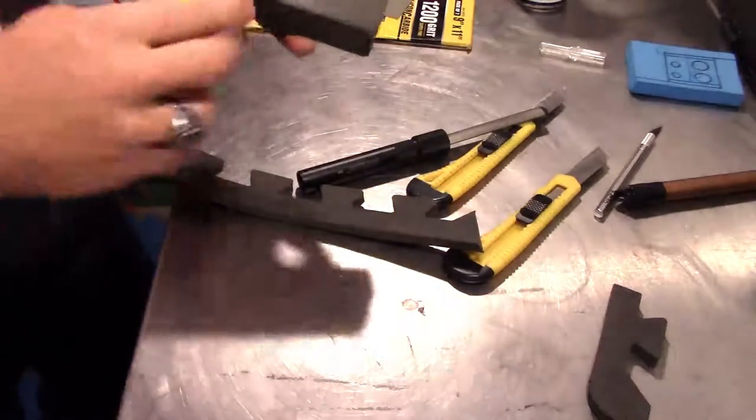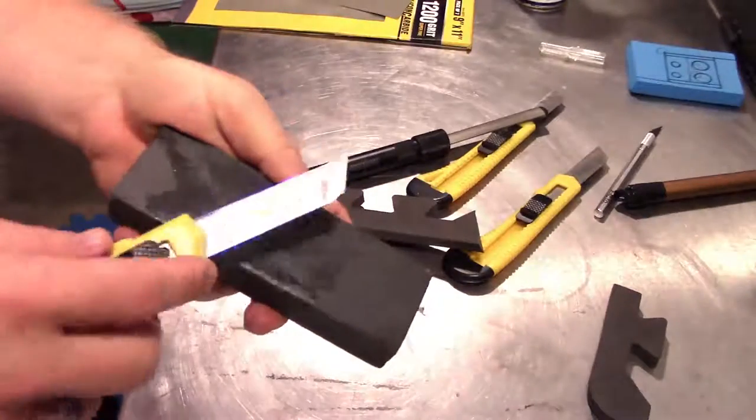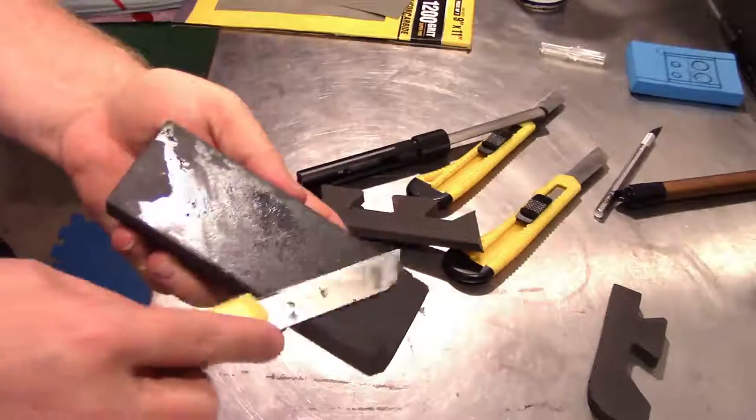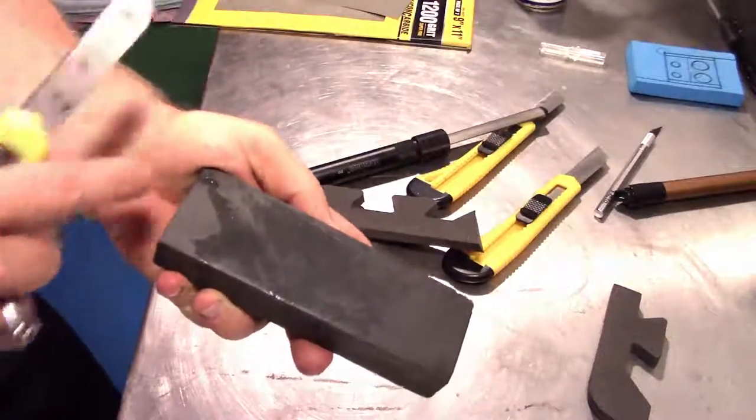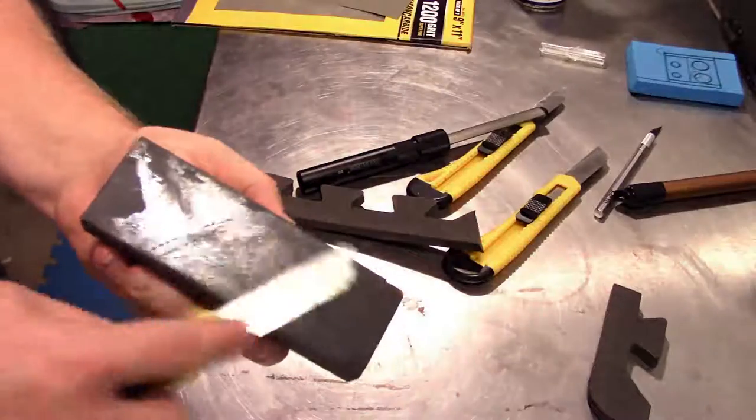The worst thing about this is when you hold it, you tend to put your thumb up. And if you're not careful, you'll slice right into your thumb or the padded part of your hand. So you have to make sure your hands stay below the sharpening stone.